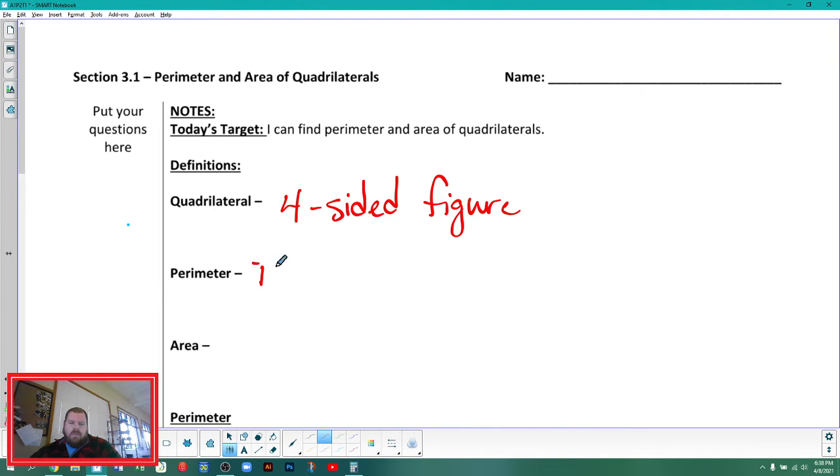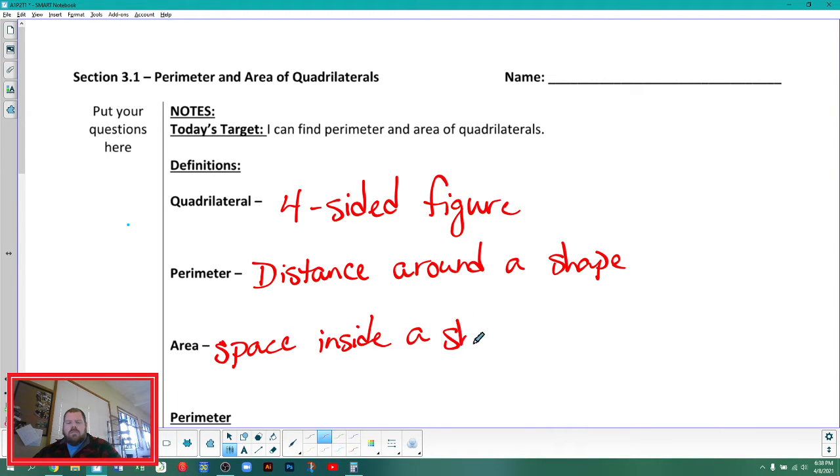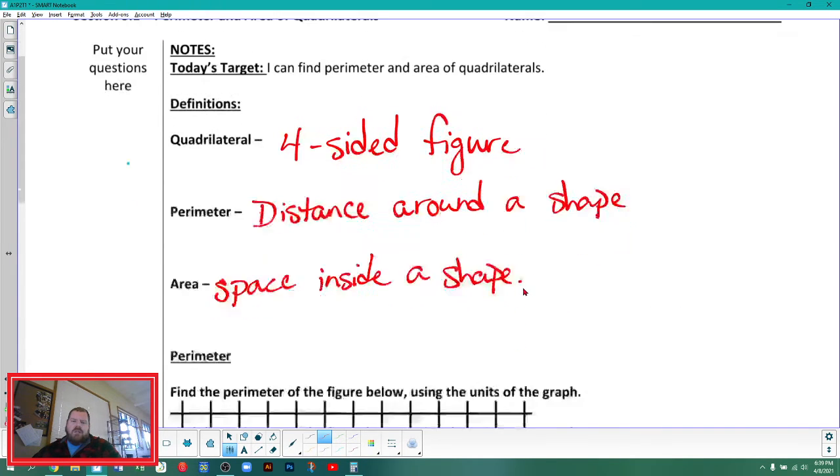Perimeter, we probably have an idea of this one because we've talked about it in the past. Distance around a shape. Area, we've kind of talked about, but it's the space inside a shape. We're going to think of it today as the number of squares that would fit inside of a shape.